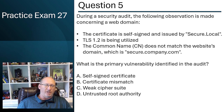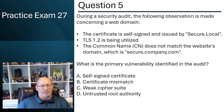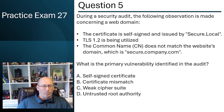Question number five. A security audit makes the following observations concerning a web domain: the certificate is self-signed and issued by secure.local, TLS version 1.2 is being utilized, and the common name does not match the website's domain, which is secure.company.com. What is the primary vulnerability? Self-signed certificate — is that a major issue? I'll put that on the back burner. Certificate mismatch — the common name does not match the secure domain, another great answer. Weak cipher suite — TLS 1.2 is really not that weak. I'd prefer 1.3, but 1.2 is not horrible. So we get rid of that one.